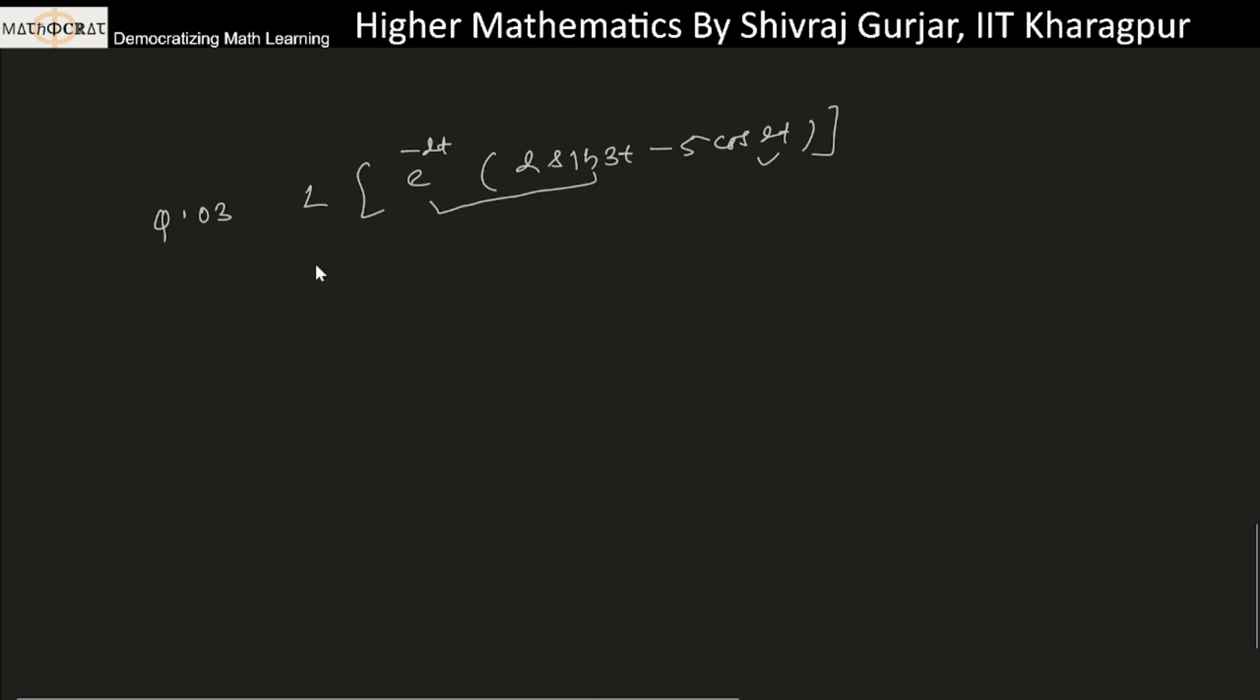So this is the question. By the linear property of Laplace transformation, we can write this as: Laplace of e to the power minus 2t times sin 3t minus 5 can be taken out. Laplace of e to the power minus 2t times cos 2t. By the first shifting theorem, we can write...